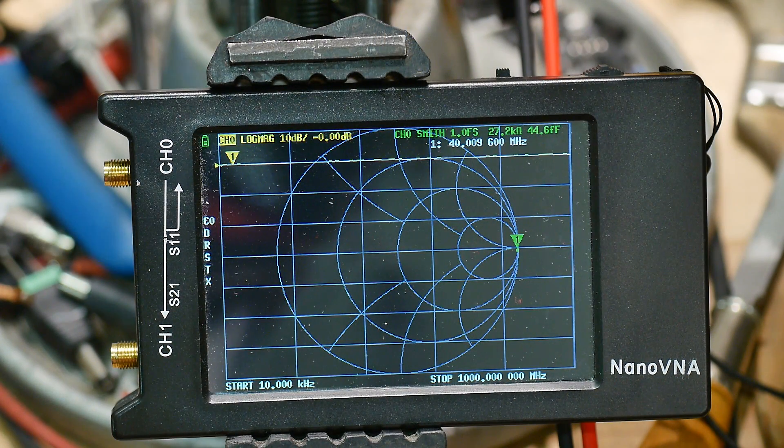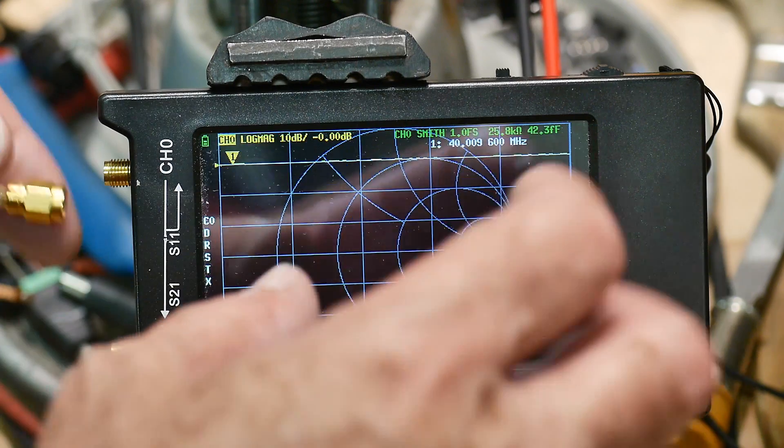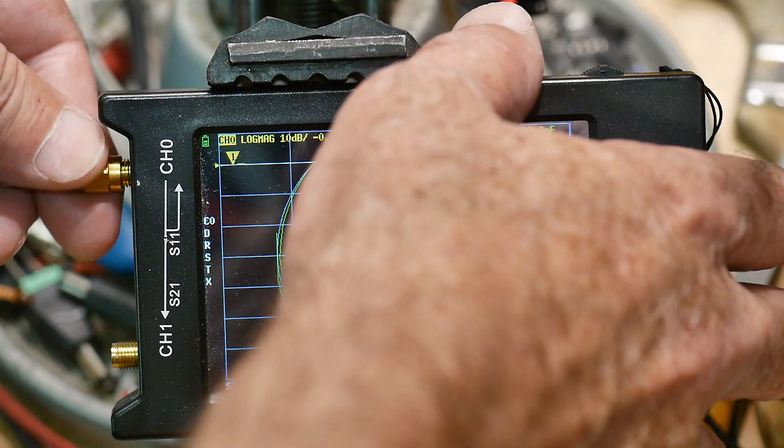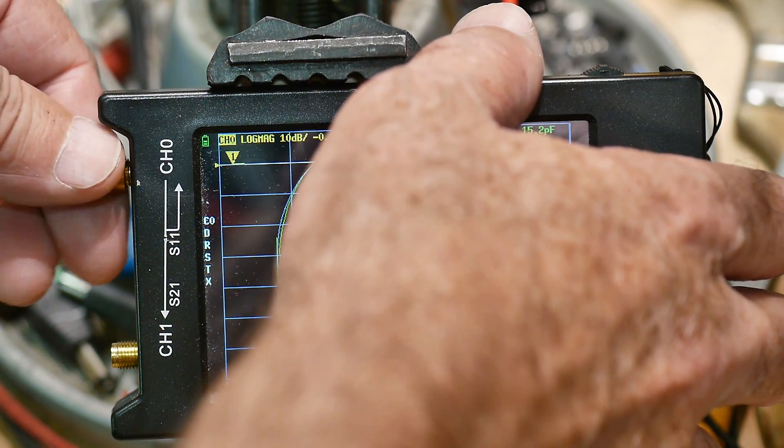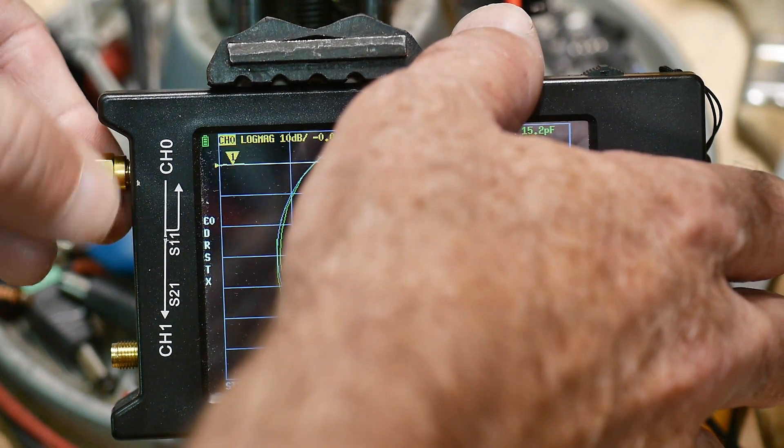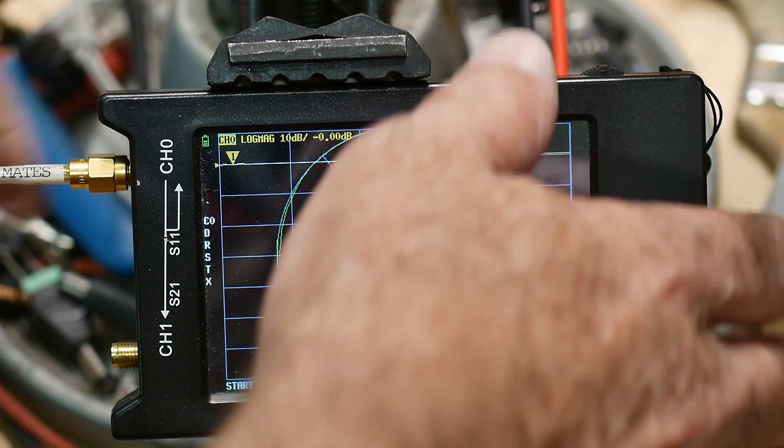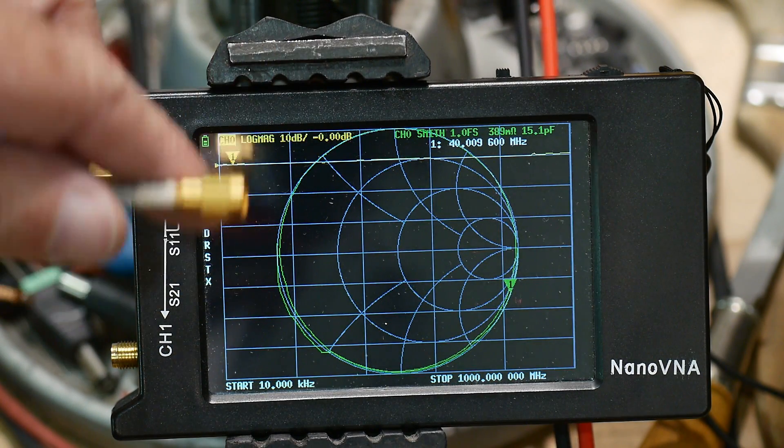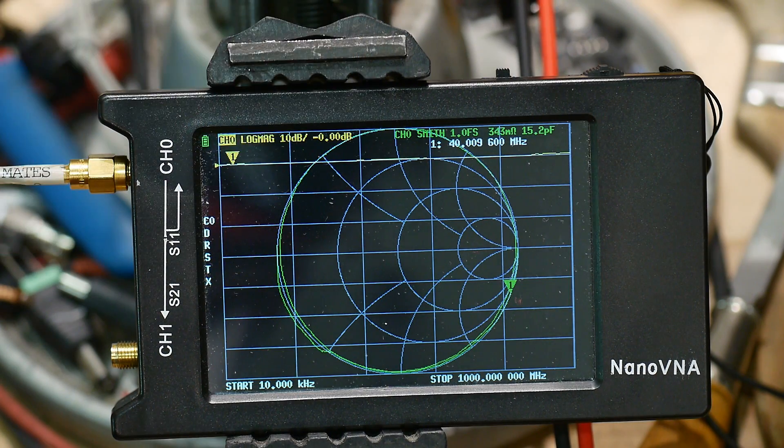The first thing I'm going to do is check the calibration of the NanoVNA to make sure it's good, and so I always like to do that. I'm going to put a cable onto channel zero, and I'm using some good cables. I have some aviation cables here that are surplus, but they have really nice USA connectors on them.